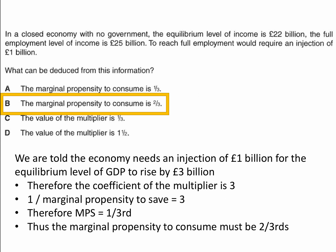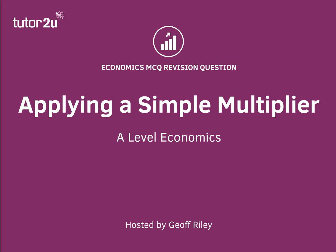Given that the MPS plus the MPC always equals 1, if the marginal propensity to save is one-third, the marginal propensity to consume must be two-thirds. And that's the reason why that's the correct answer to this question about applying a simple multiplier.